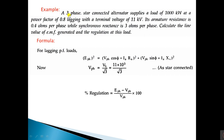Example problem: A three-phase star-connected alternator supplies a load of 1000 kilowatts at a power factor of 0.8 lagging with a terminal voltage of 11 kilovolts. Its armature resistance is 0.4 ohms per phase and synchronous reactance is 3 ohms per phase. Calculate the line value of EMF generated and the regulation at this load. For star connection, V_phase = VL/√3 = 11000/√3 = 6350.853 volts.